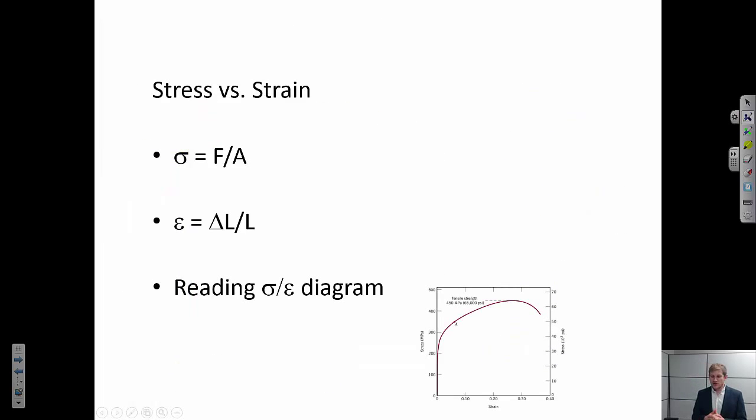Okay, so in summary we've defined what stress is. Stress is force per unit area. And we've defined what strain is. Strain is elongation per original unit length. And we use stress and strain because we want to get at intrinsic material properties. We want to get away from forces and elongations, which are dependent on the volume of material that you're looking at. Finally, we just did a little exercise on how to read a stress-strain diagram and calculate values off it.